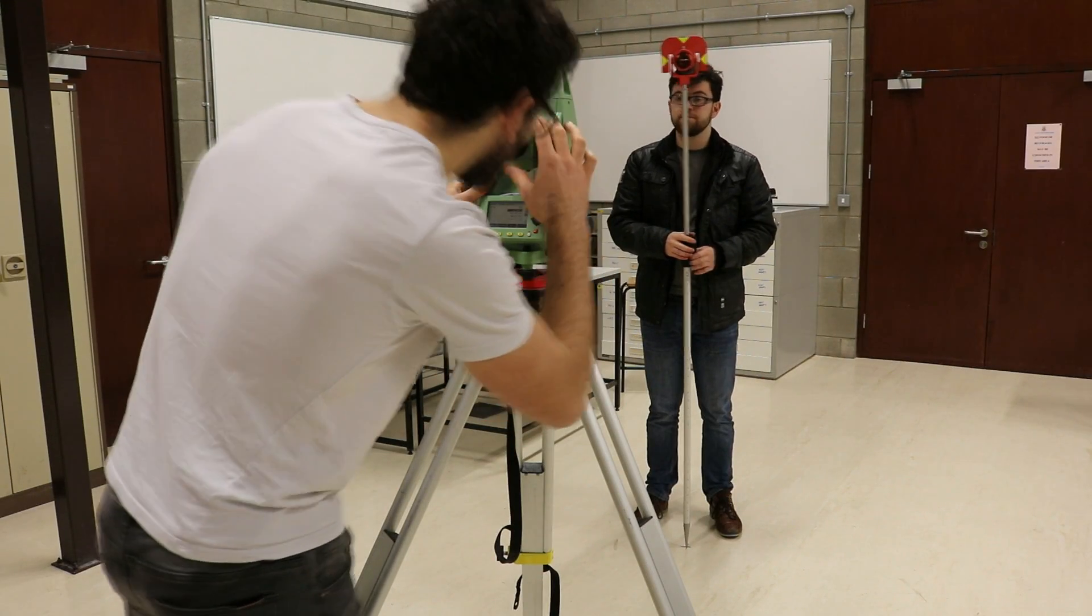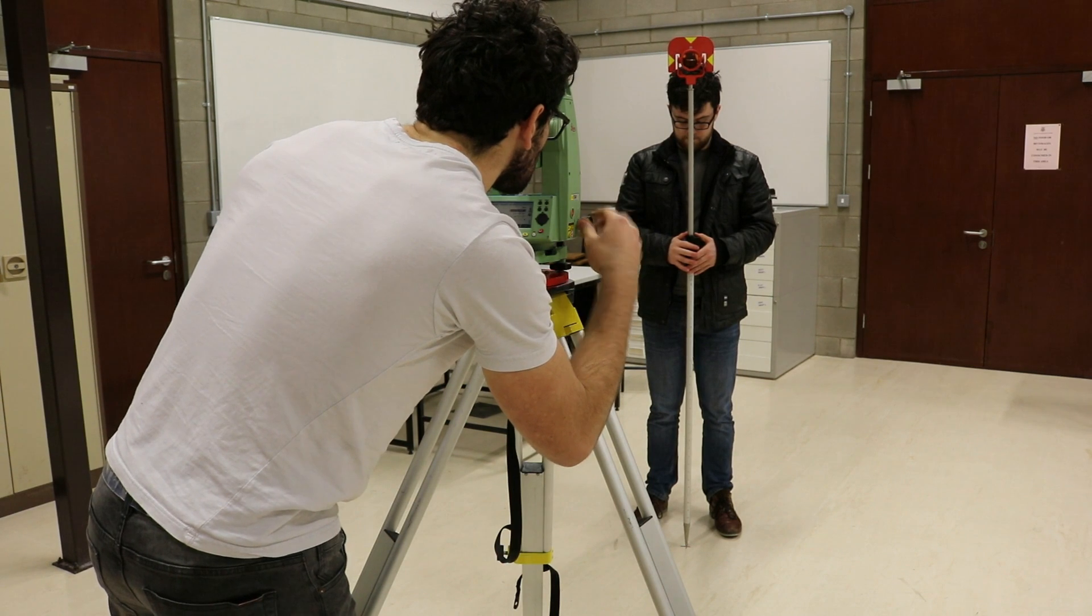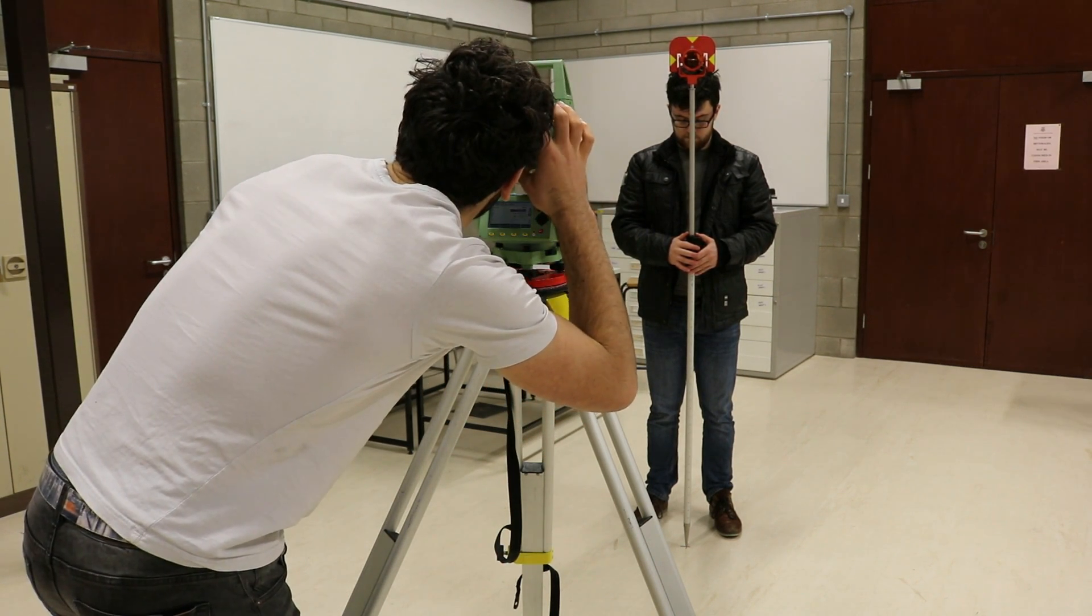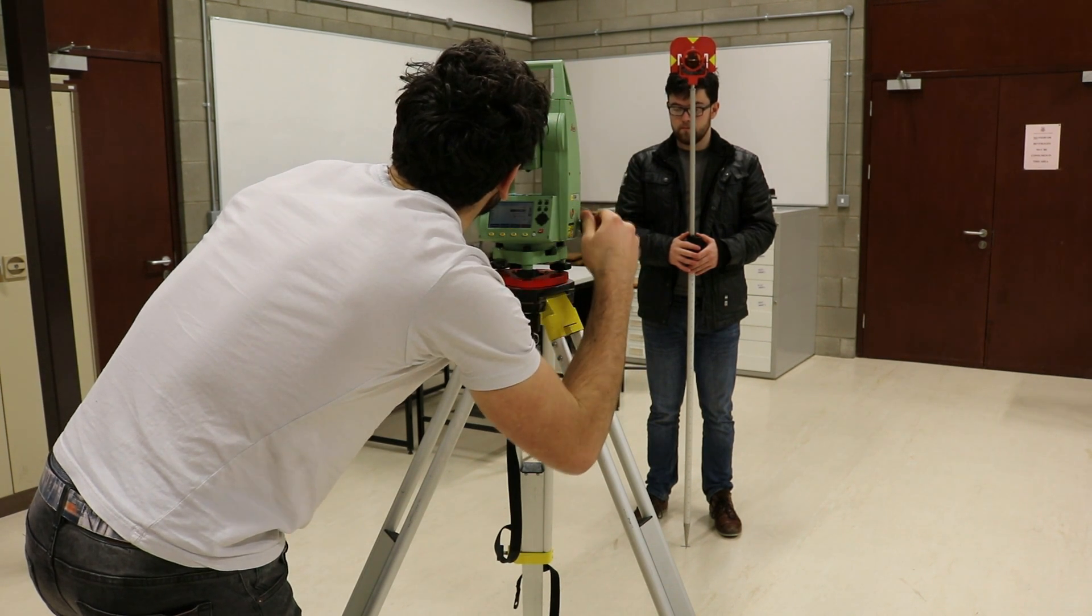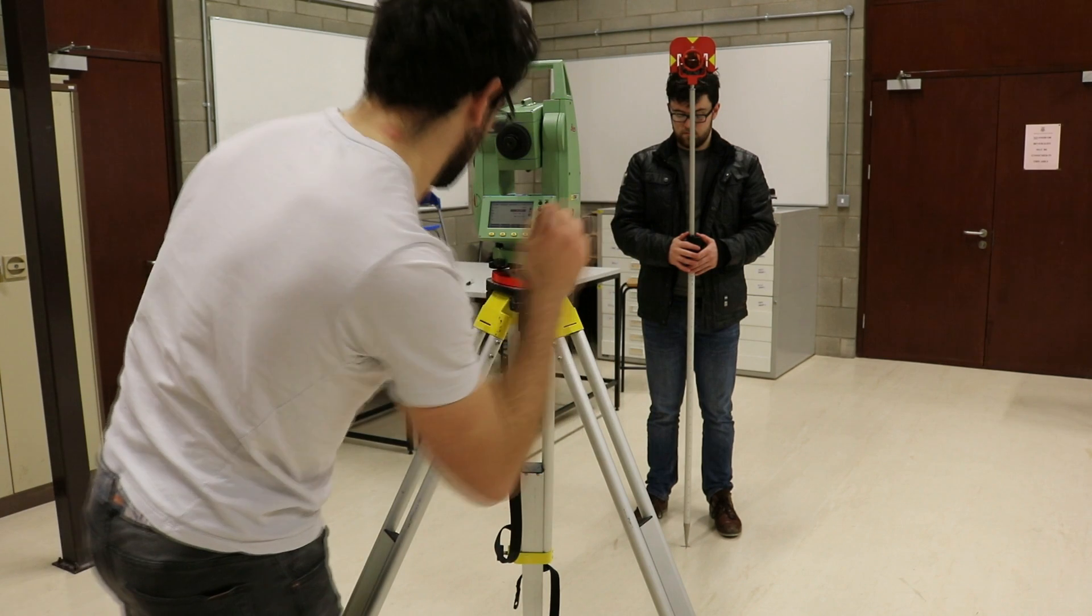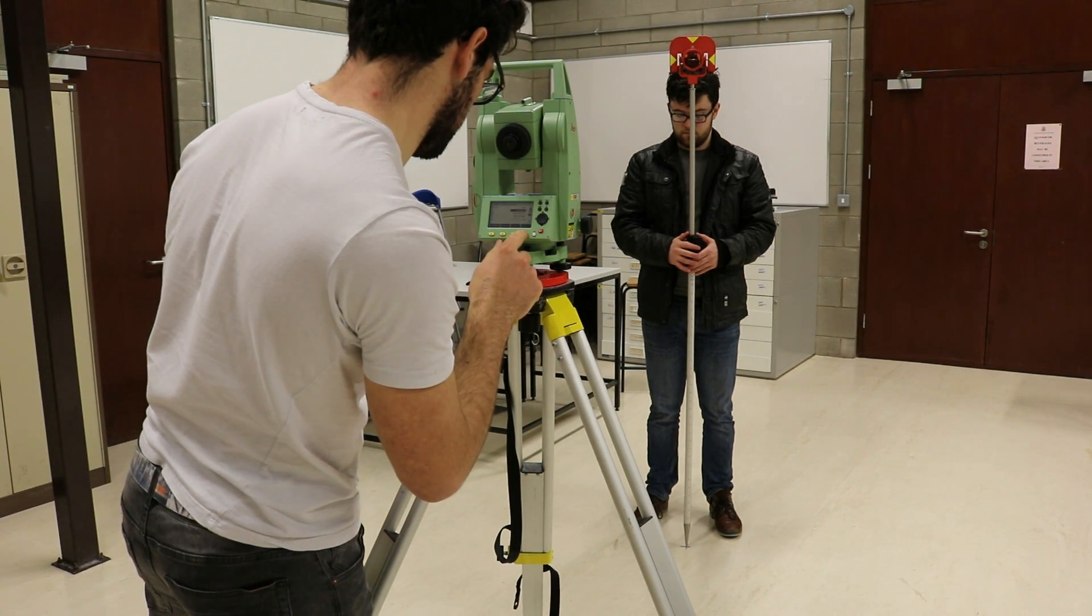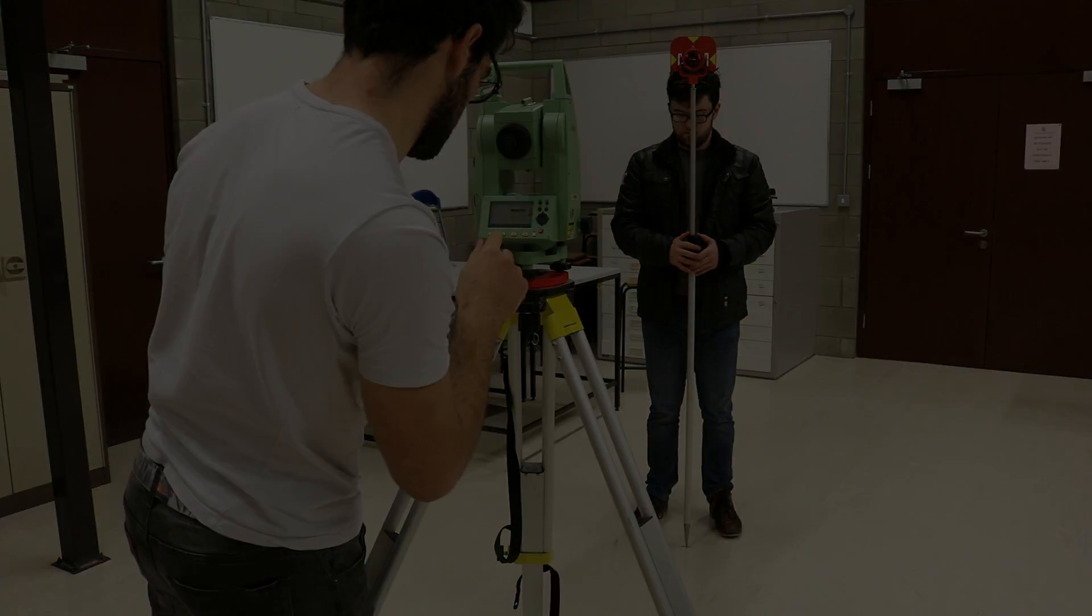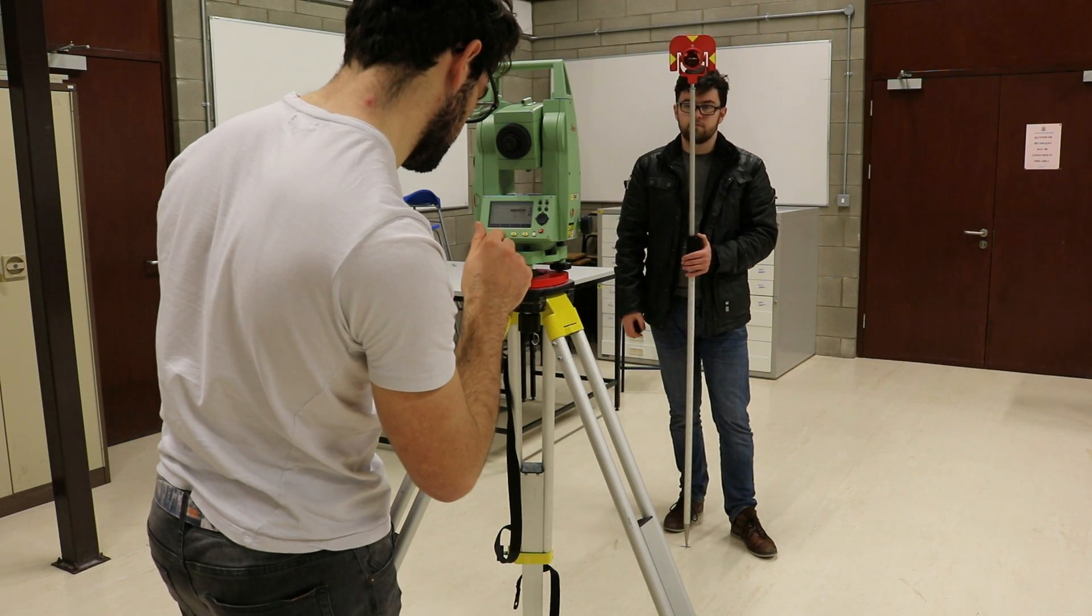Now, you must backsight to the known point. To do so, look through the eyepiece of the total station and aim the crosshairs at the prism placed over the unknown point. Adjust the focus of the total station by twisting the collar close to the eyepiece until the prism snaps into focus. The aim is to have the center of the crosshairs lining up with the vertical and horizontal markings on the prism.